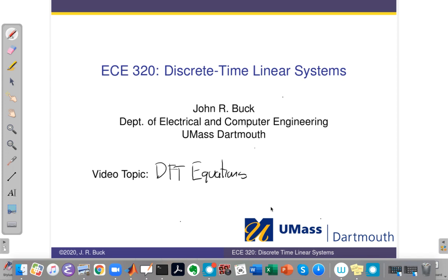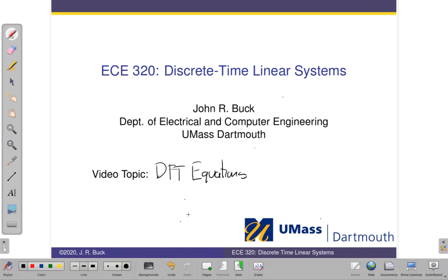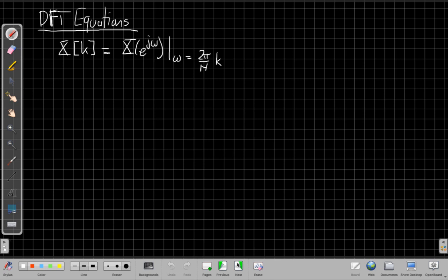So the whole idea of the discrete Fourier transform is that this is something practical we're going to compute. We can't compute x of e to the j omega because there's an infinite set of omegas between 0 and 2 pi.